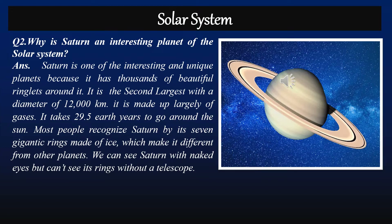Most people recognize Saturn by its seven gigantic rings made of ice, which make it different from other planets. We can see Saturn with the naked eye, but cannot see the rings without a telescope.